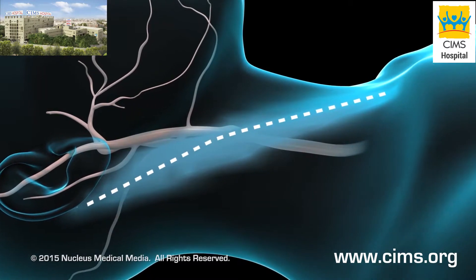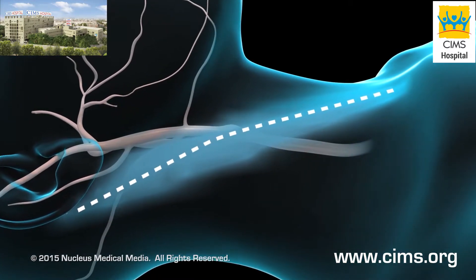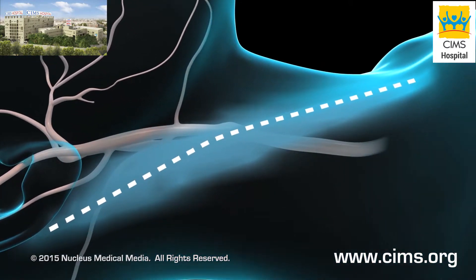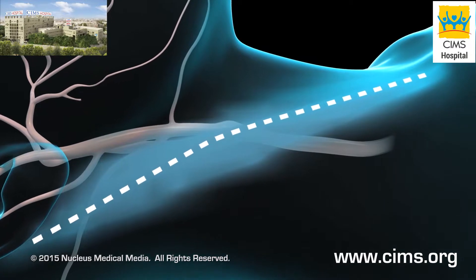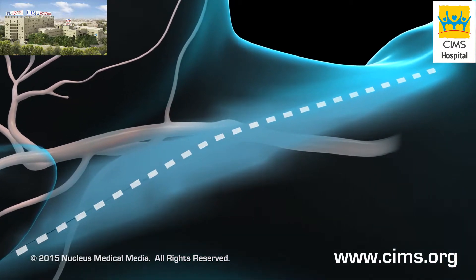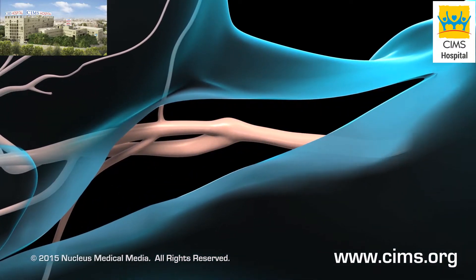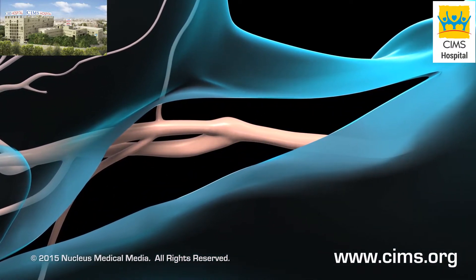On the side of your neck along the blocked artery, the surgeon will make an incision that may run from just behind the ear to a point above the collarbone.